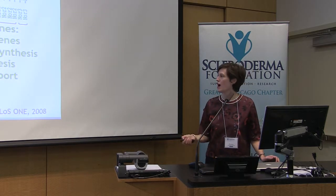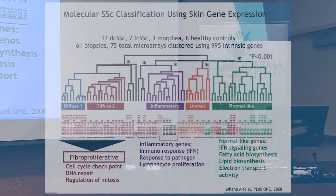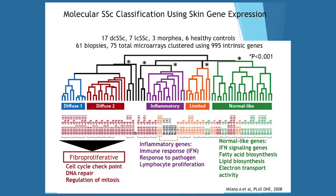The first discovery published in 2008 was by Dr. Michael Whitfield's laboratory at Dartmouth. He pioneered this approach — taking skin biopsies, looking at gene expression, and identifying five molecular subsets of scleroderma. So while clinically we see two subsets — limited versus diffuse — looking at gene expression from biopsies, he identified five groups: the diffuse, the inflammatory, the limited, and the normal-like groups.